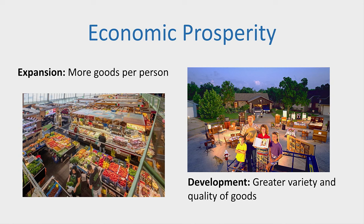Let's talk about what is economic prosperity. Economic prosperity is the result of economic expansion and development, and those are two slightly different things we can distinguish between. Expansion simply means more goods per capita — an economy that is expanding would be one that allows us to have more food, more clothing, more shelter, or more smartphones. That's economic expansion, more goods per person — the closest thing to what a lot of conventional economists call economic growth.